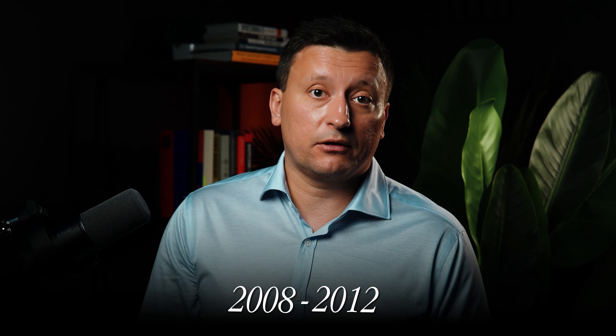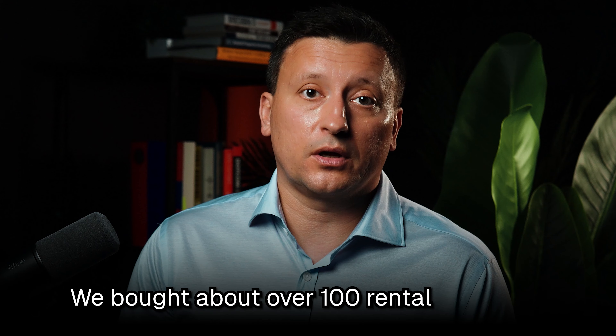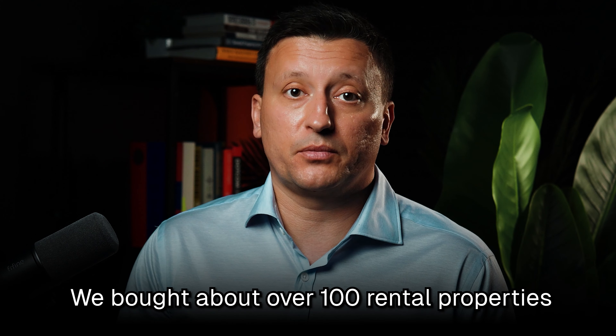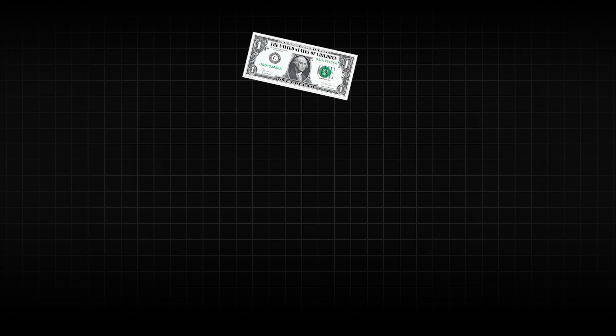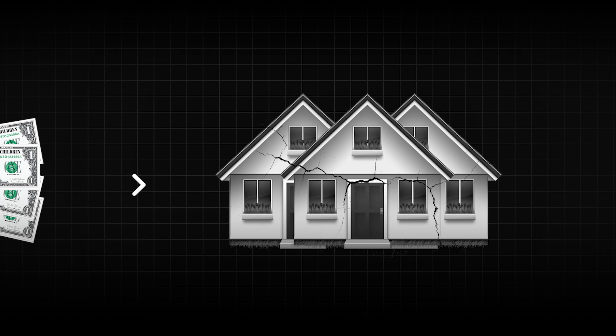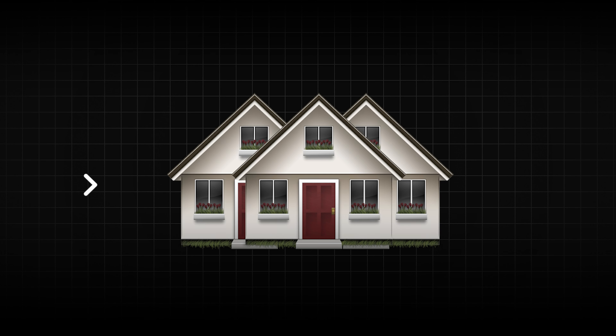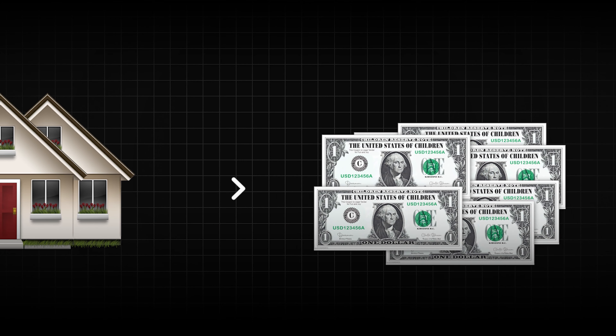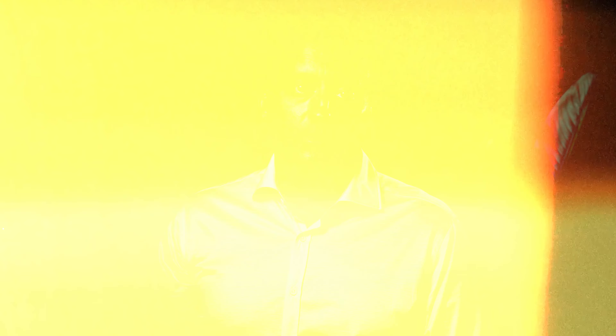And that's exactly what I did. I started buying rental properties. From 2008 to 2012, we bought over 100 rental properties and built a large portfolio — that was my financial independence. You can do it the same way: generate quick cash by buying houses, fixing them up, and reselling them to provide a decent down payment.